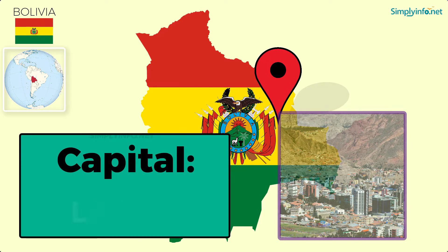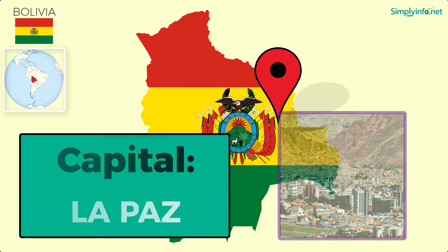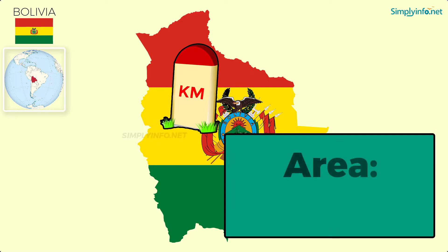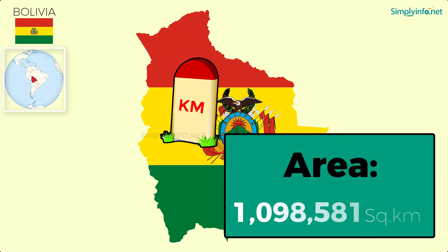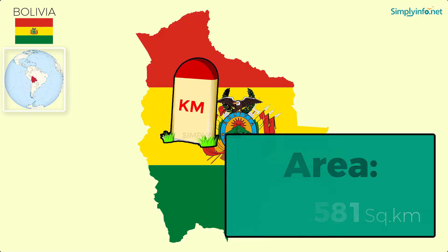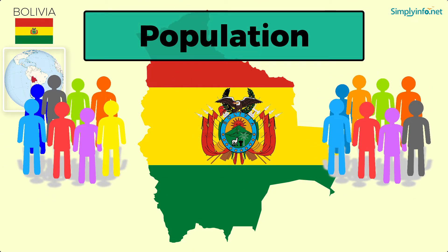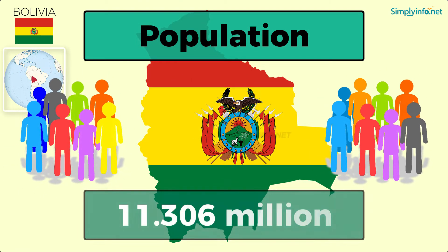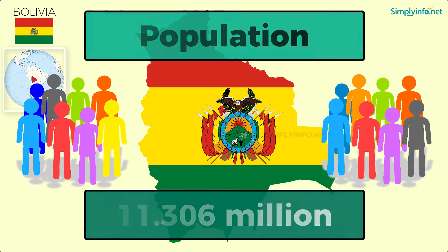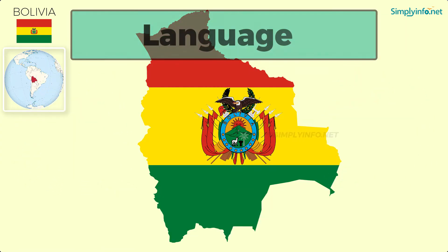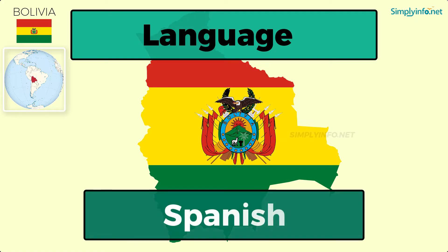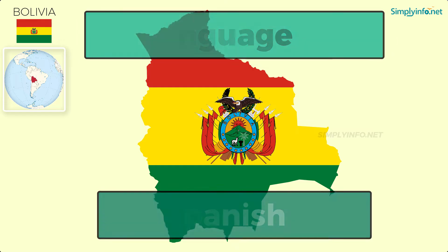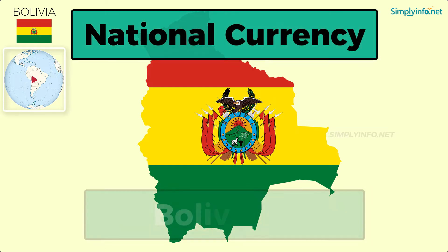Capital: La Paz. Area: one million ninety-eight thousand five hundred and eighty-one square kilometers. Population as of 2018: eleven point three zero six million. Language: Spanish. National currency: Boliviano.